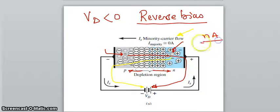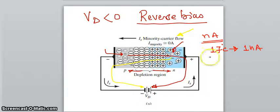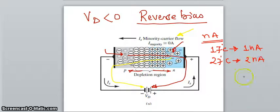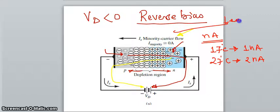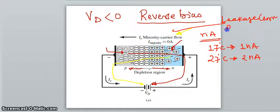When this current goes high, that depends on temperature. For example, if the temperature is 17 degrees centigrade and the current flow is 1 nano ampere, a rise in temperature near the diode by 10 degrees centigrade will double the leakage current or reverse bias current. This current due to minority charge carriers is also called reverse bias saturation current or leakage current.